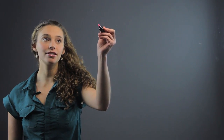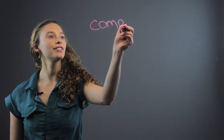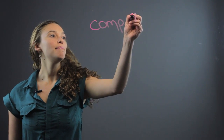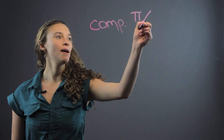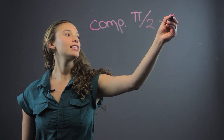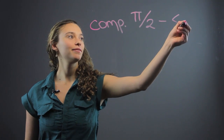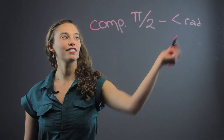Hi, I'm Rachel, and today we're going to be going over how to find complement and supplement in radians. Complementary angles — comp for complementary angles — we measure by pi divided by 2 minus the angle in radians. Make sure it's in radians, not degrees.